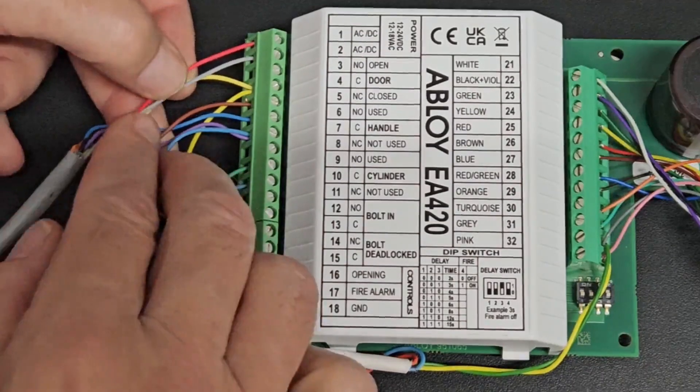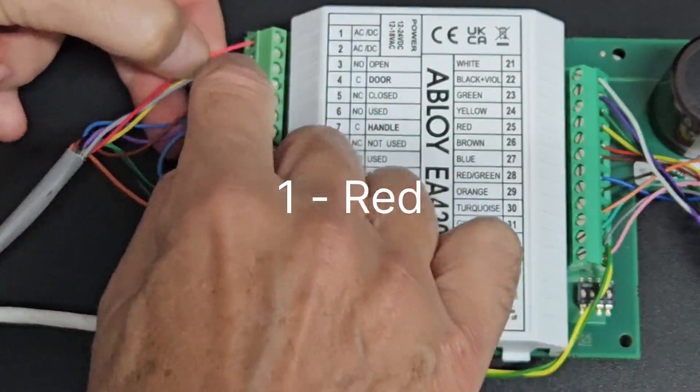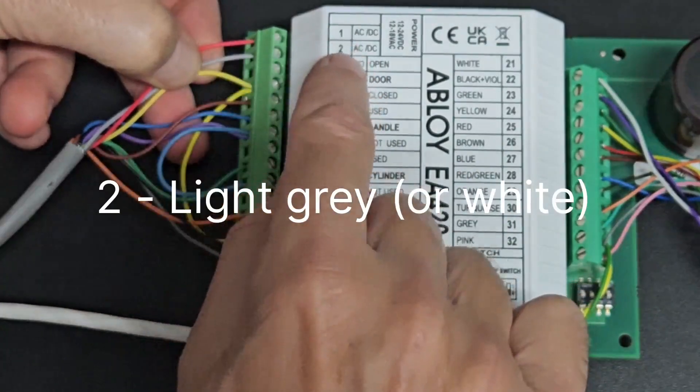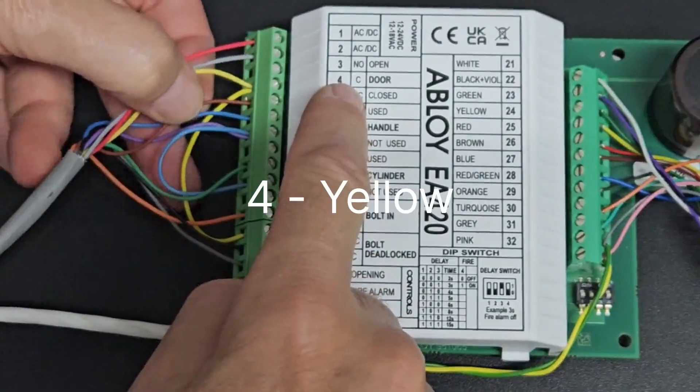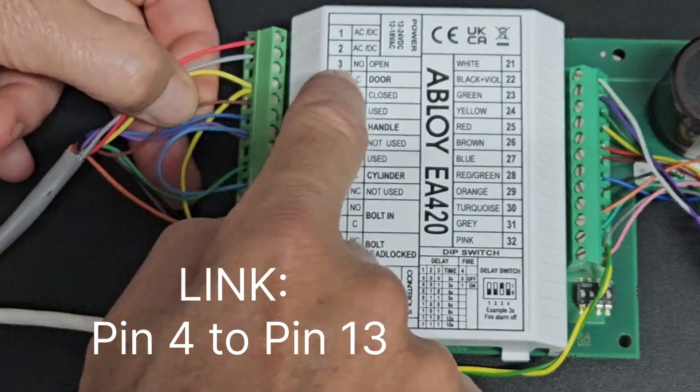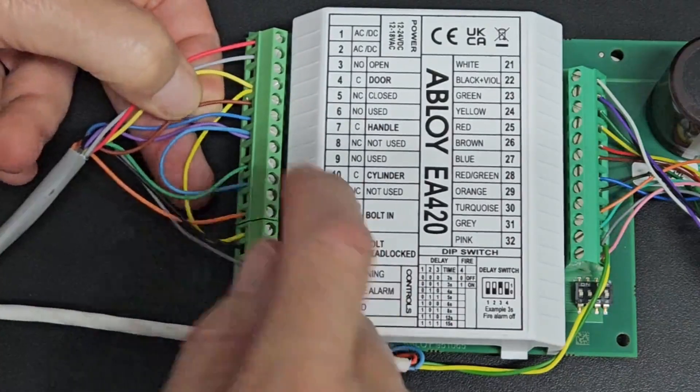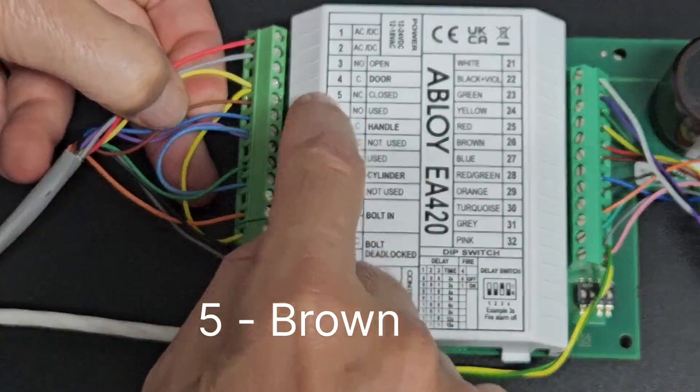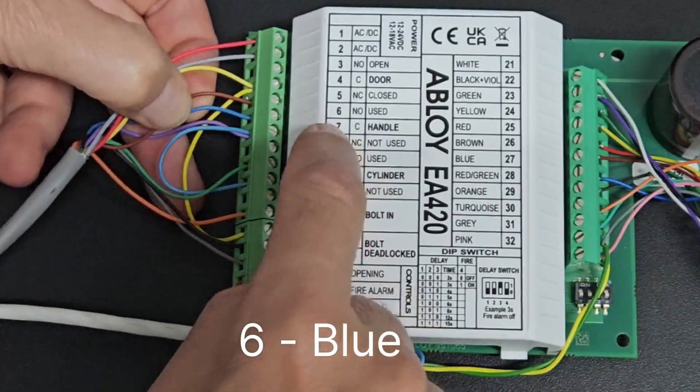Beginning with the 10-core cable, you fasten the red wire into number 1, the grey or the white wire into number 2, yellow wire into number 4, put a link from number 4 down to number 13, brown wire into number 5, number 6 is a blue wire.